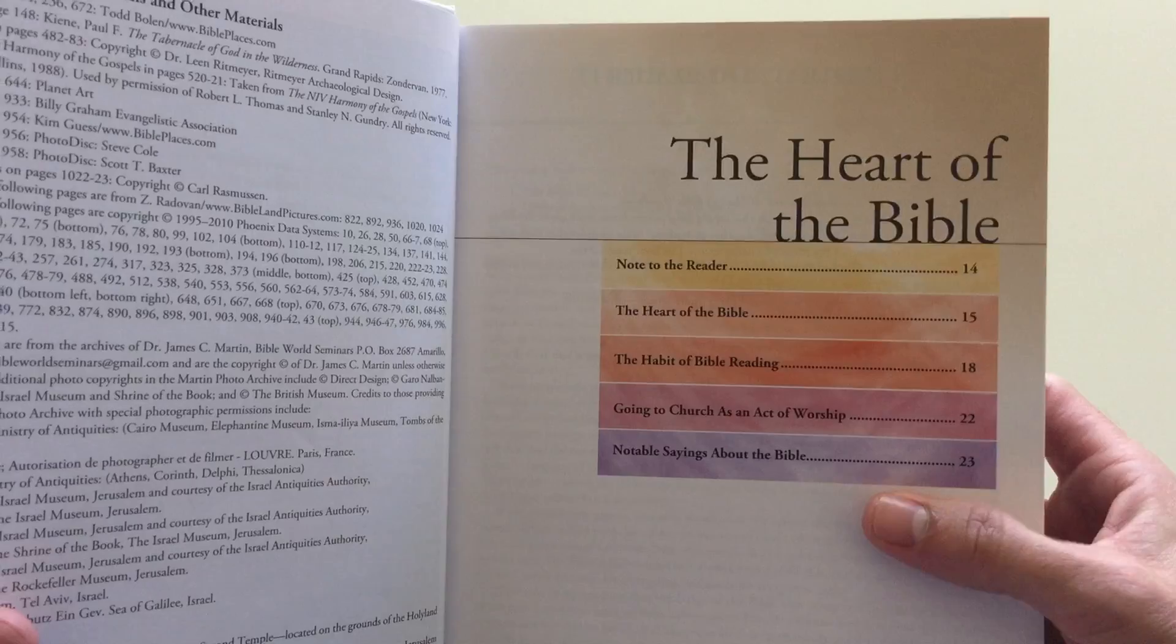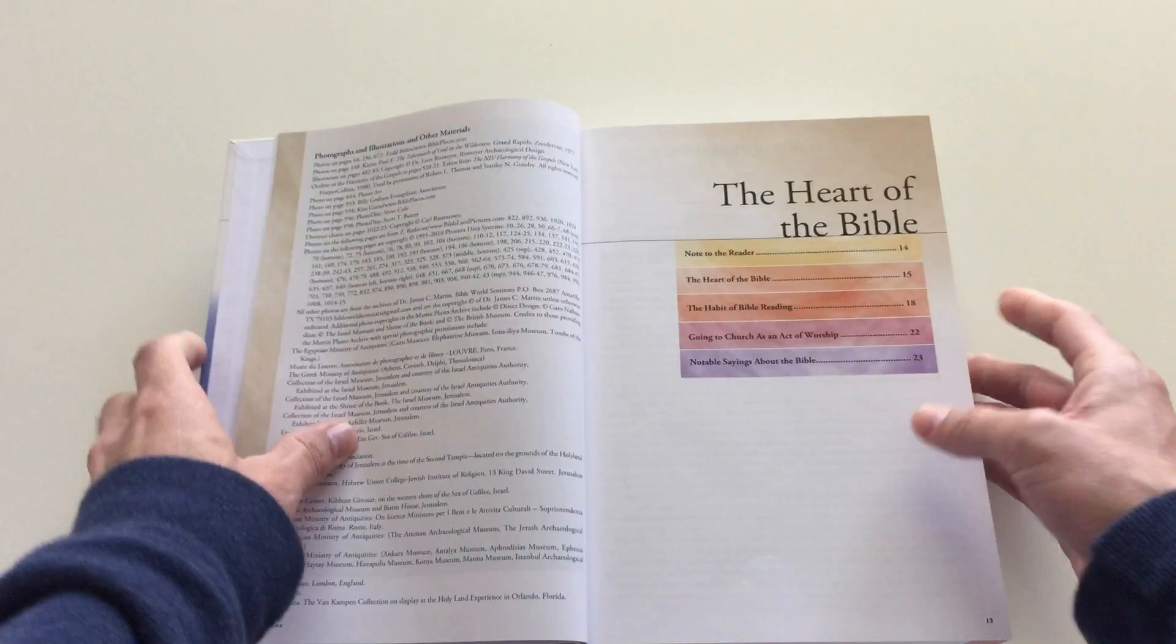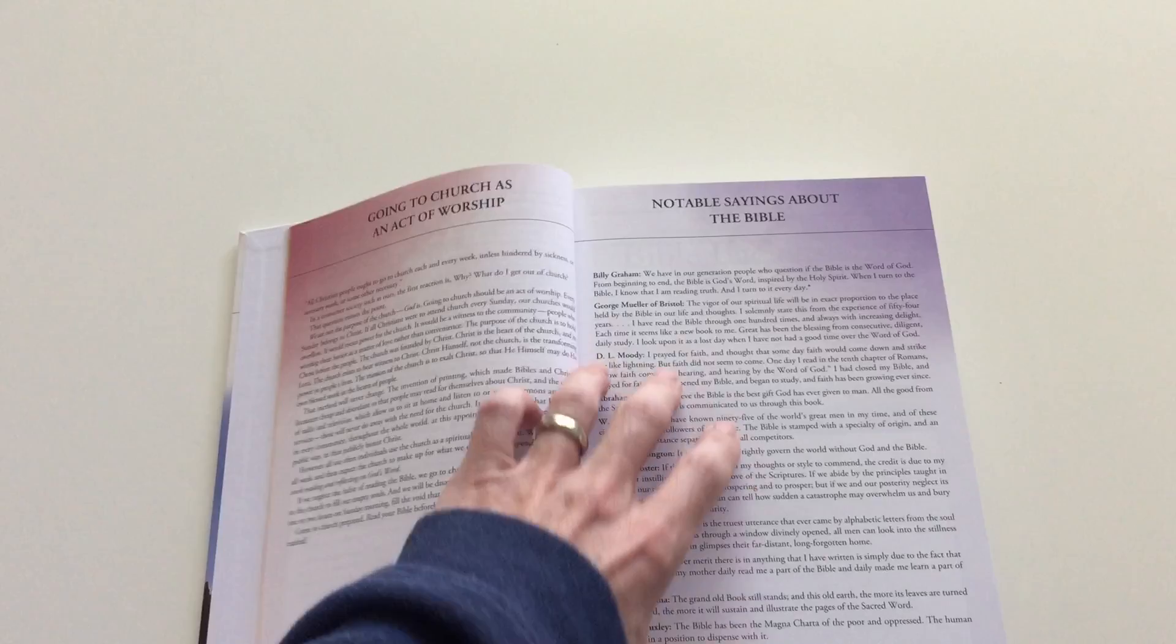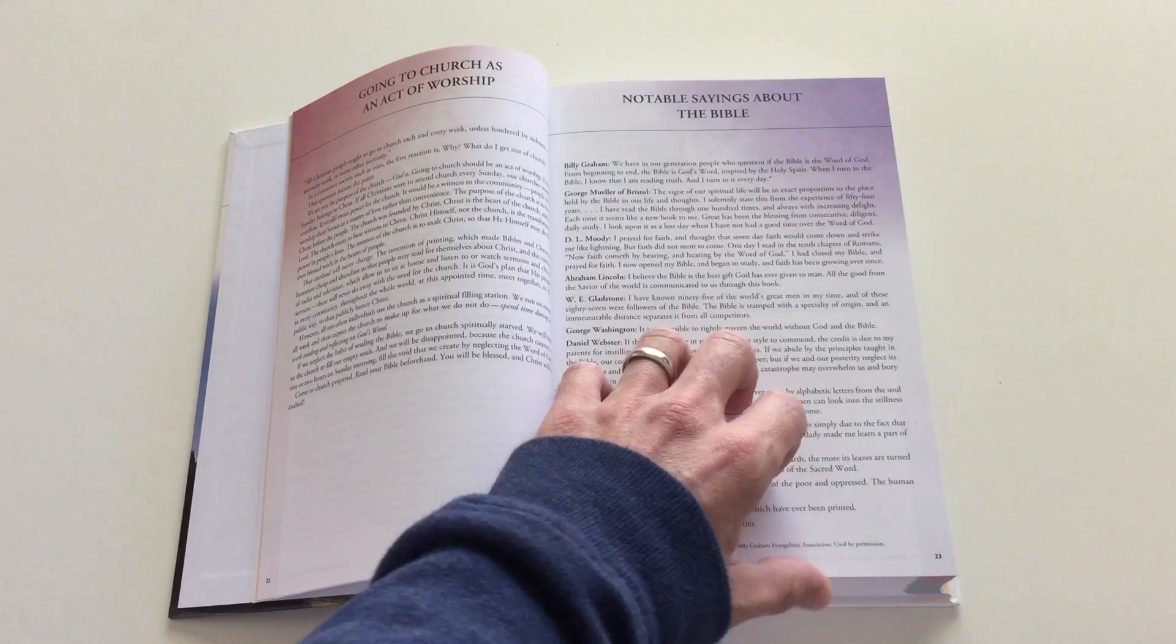Here it says 'The Heart of the Bible.' Now there's a note to the reader, the heart of the Bible, habit of Bible reading, going to church as an act of worship, notable sayings about the Bible. And as you'll see, each one is color-coded. So what that represents is 'note to the reader' is kind of this orangish yellow color here. And you can see the orange color here. If you want to get notable sayings about the Bible, you're just going to go here to the first purple that you see, which is going to be right here. And you can see the purple. So that's kind of what it is - it's kind of an index, a color index system that they've got. It's very, actually very helpful.